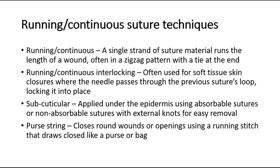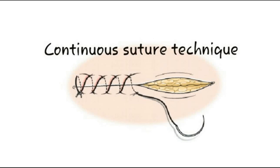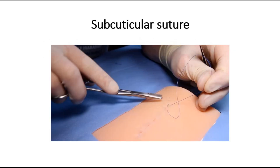Subcuticular suture is applied under the epidermis using absorbable or non-absorbable sutures, with external knots for easy removal. Whereas purse string sutures close round wounds or openings using a running stitch that draws closed like a purse or bag. This picture shows a continuous suture technique, whereas this picture shows a subcuticular suture, where you can barely see any suture over the skin.